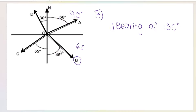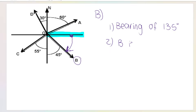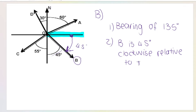Method number two for vector B is relative to the positive x-axis. We start at the positive x-axis and go until we hit vector B. First question: did we go clockwise or anti-clockwise? Going this way is clockwise. If that angle is 45, this one has to be 45 as well. So vector B is 45 degrees clockwise relative to the positive x-axis. Remember, it's always the positive x-axis — you're never going to quote in terms of the negative x-axis.